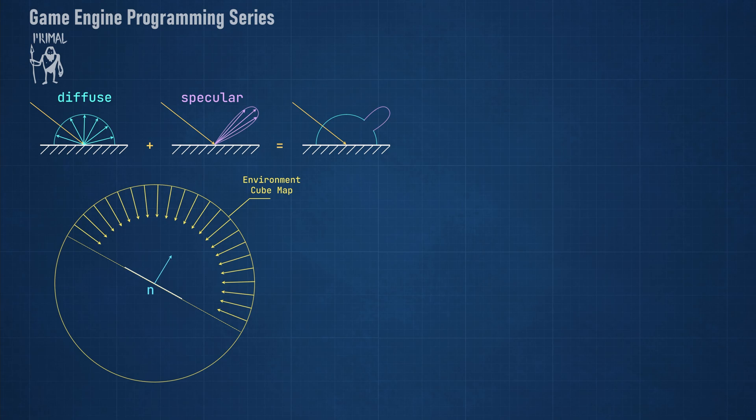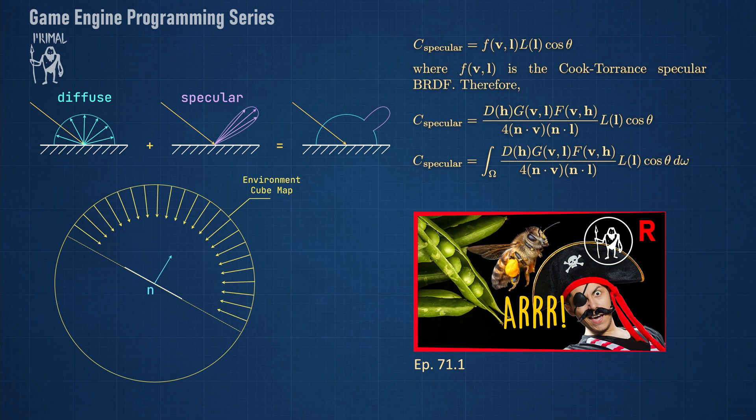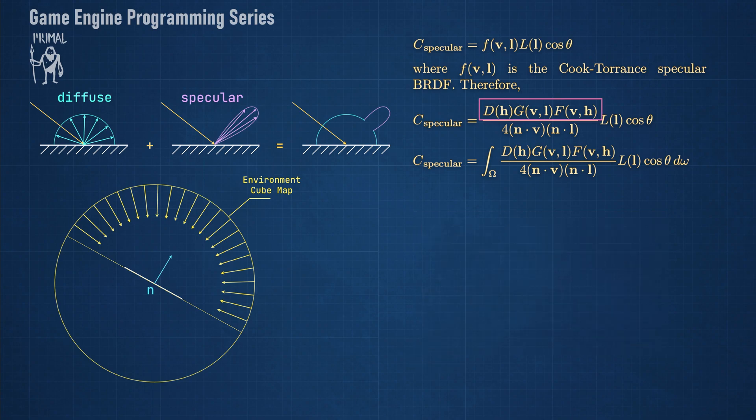Today we are going to use it for sampling the hemisphere with the Cook Torrance specular BRDF. We know this BRDF from the Physically Based Rendering video where I gave a high-level explanation of these functions.